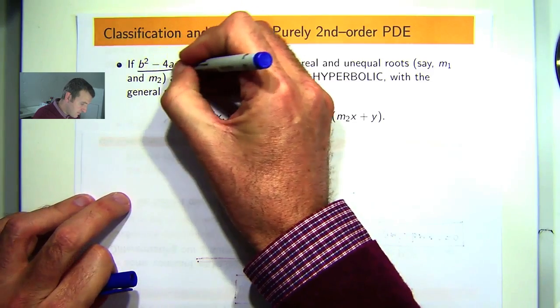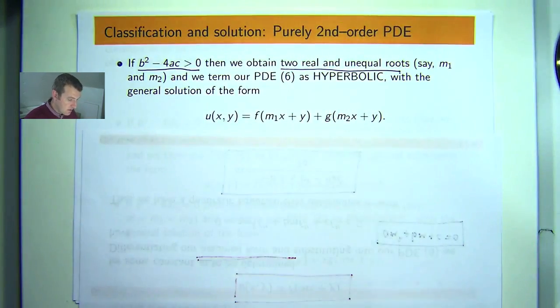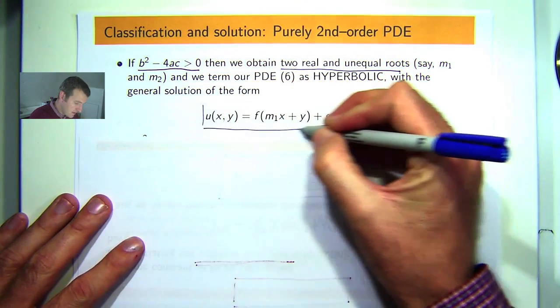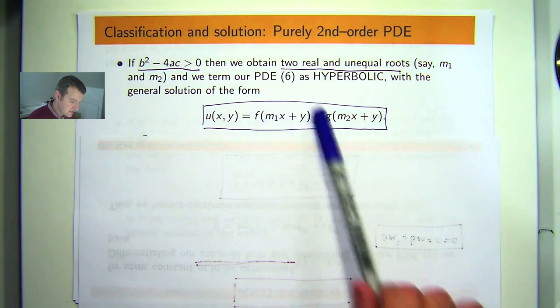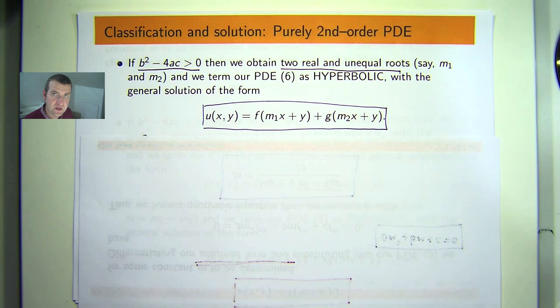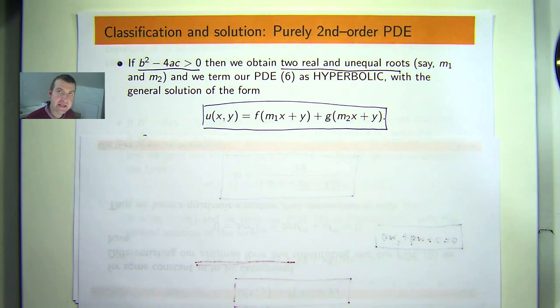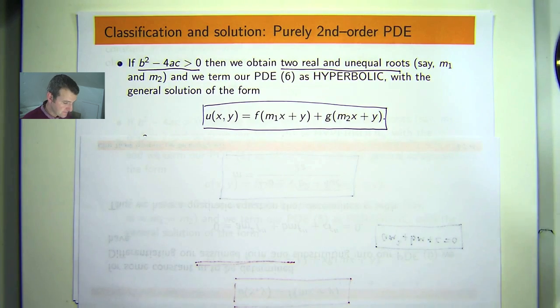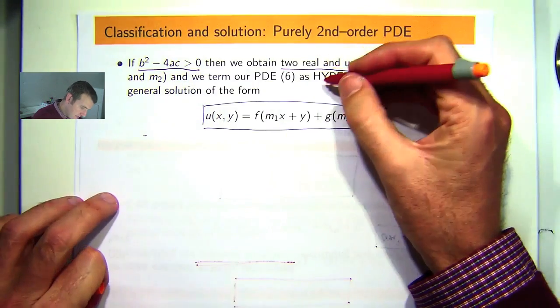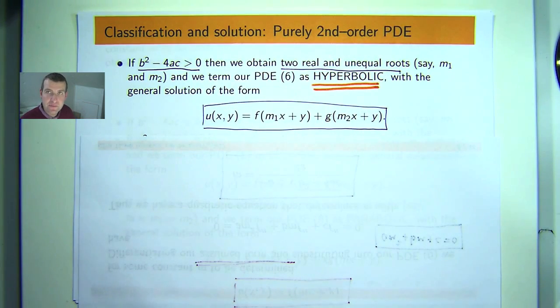Now if the discriminant is positive, then we obtain two real and unequal roots. And the form of our solution, the general solution, is this. Now because there's two roots, this will be a solution and this will be a solution for arbitrary but differentiable functions F and G. And the linearity of the PDE 6 means that the sum of any two solutions is also a solution. So this is why we have two functions here. Now in this case, where the discriminant is positive, we're going to refer to the PDE 6 as hyperbolic.